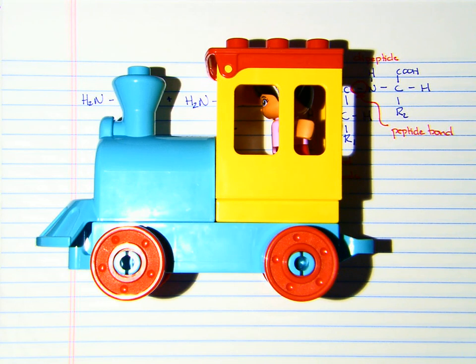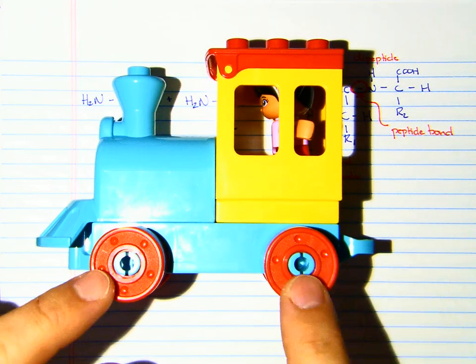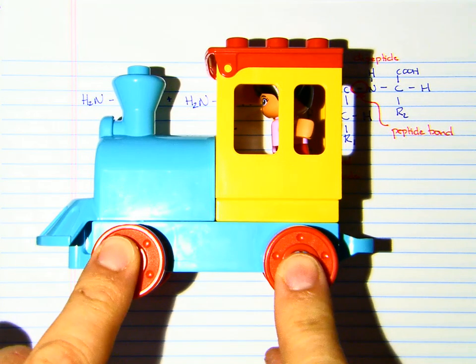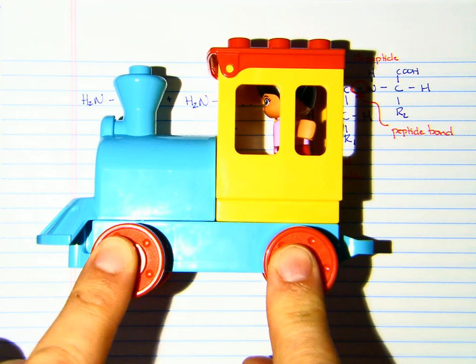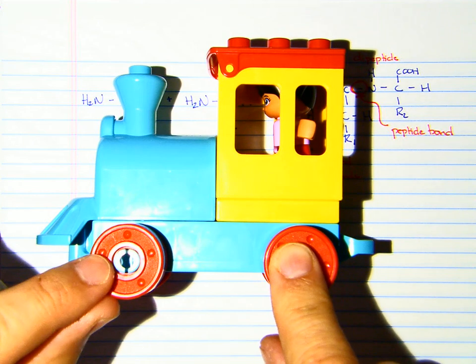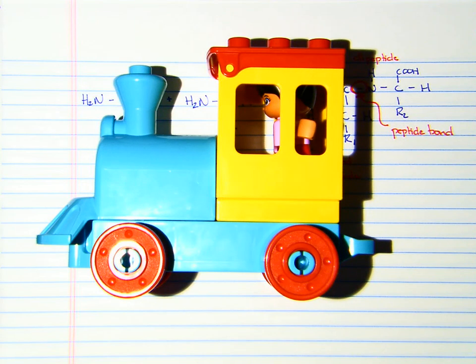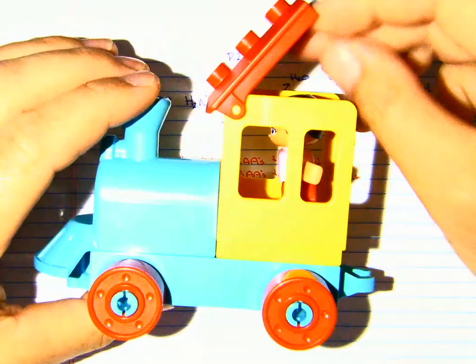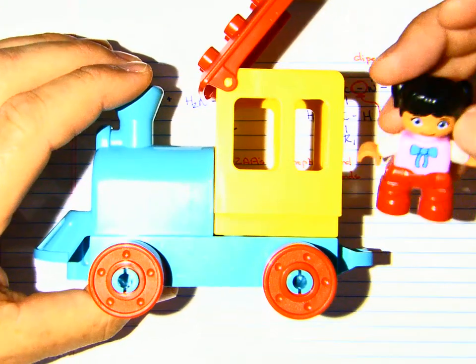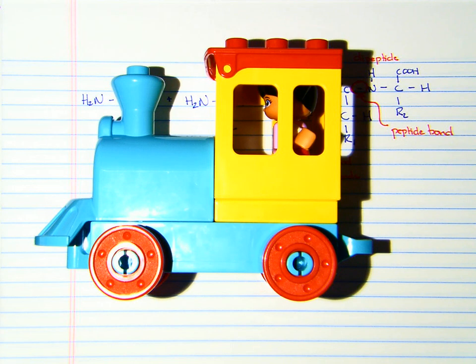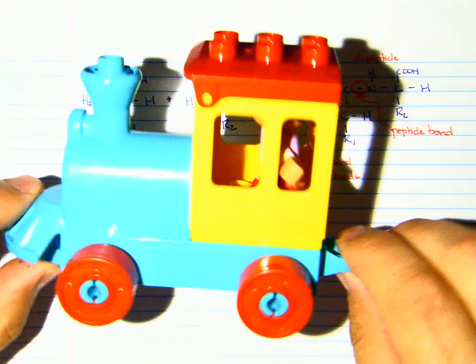Something that all components of a train share is they all have wheels. We're going to say that the wheels basically represent the amine group and the carboxylic acid. What gets put on or the R group represents what is the job. You can notice that this is an engine and its job is to move. It's different from the rest of the amino acids. This is an amino acid.